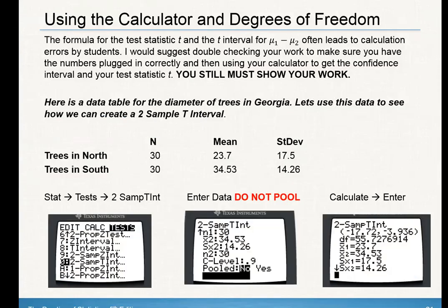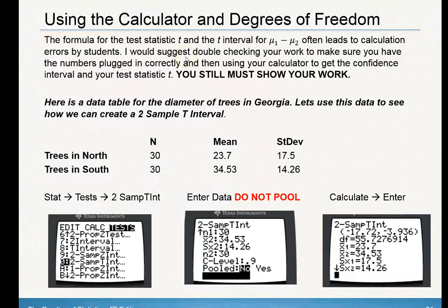I would highly suggest whenever you are doing these questions to use your calculator degrees of freedom. Since you have two samples and your test statistic t, both sample sizes might not necessarily be the same size. Previously when we found our degrees of freedom, we always took n minus one, but getting your degrees of freedom is a little more complicated when you have two samples. There are two ways to do this. When you're doing confidence intervals, I would plug the information into your formula, but I would suggest getting the answer from your graphing calculator to make sure you have the answer correct, because a lot of errors can happen as you type it in.